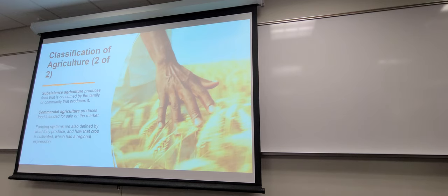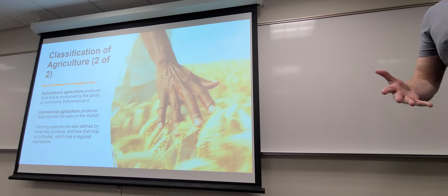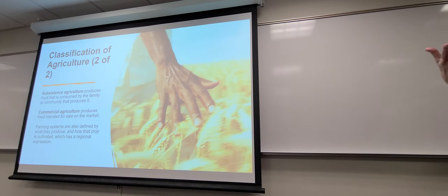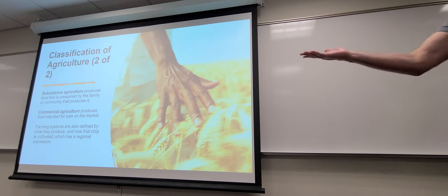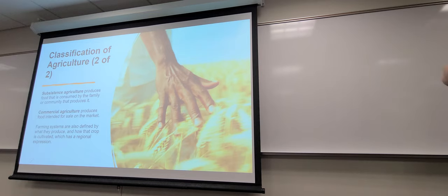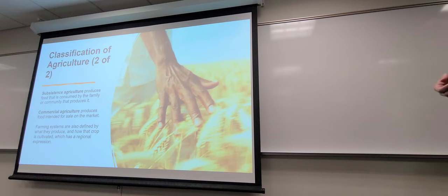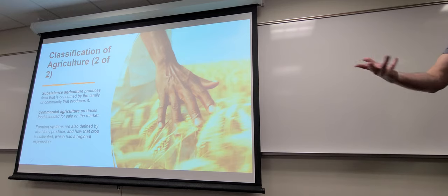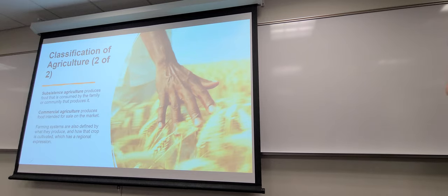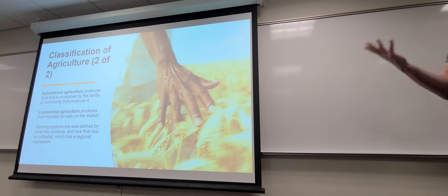Subsistence agriculture is what it sounds like — people growing food for themselves, sometimes at a community level. That's contrary to commercial agriculture, where you're growing food that is definitely not for yourself; you might just have a job on a farm rather than owning it. In commercial agriculture you want to produce as much product as possible, whereas in subsistence agriculture you roughly know how much your family needs and might grow a little to sell on the side, but not a ton.